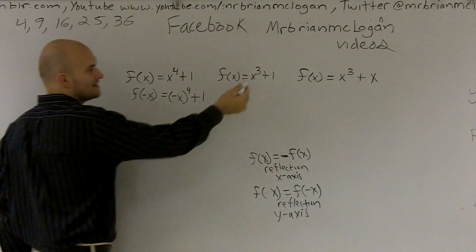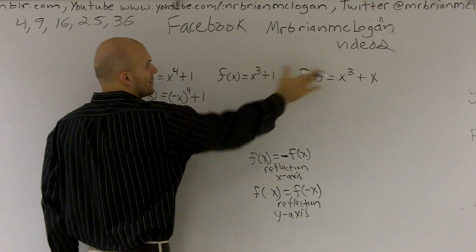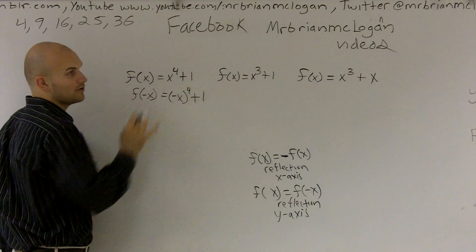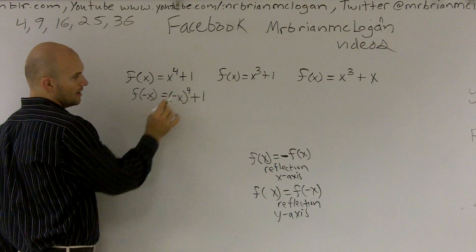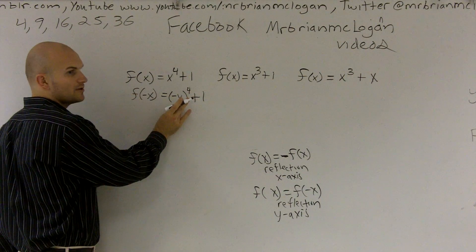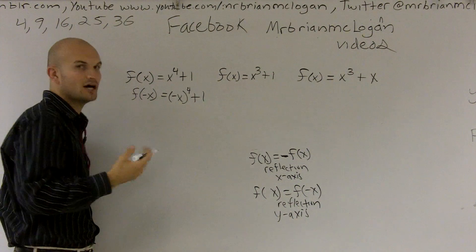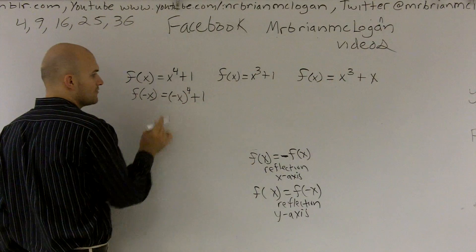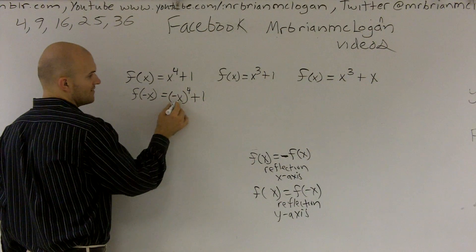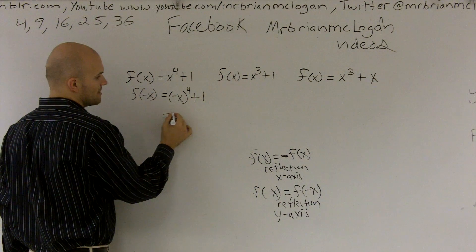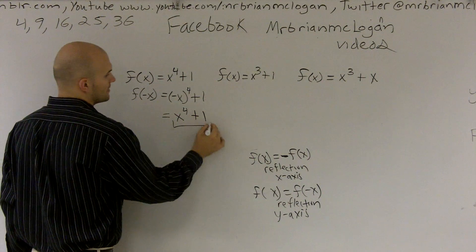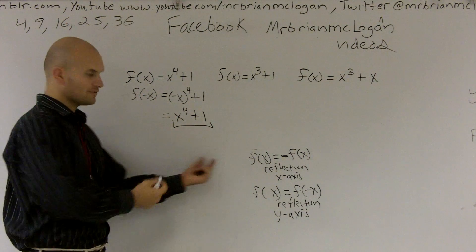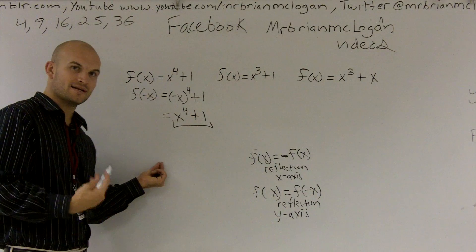First of all, I'll show you in these couple why this is not odd, or why these two are not both odd, even though they both have odd exponents. Here, any number multiplied by itself an even amount of times is always going to be positive, if it's negative or positive. Therefore, negative x to the fourth power is just going to give me positive x to the fourth.